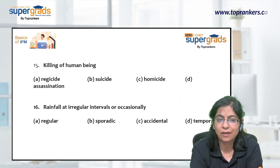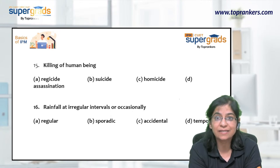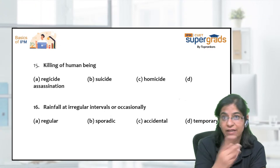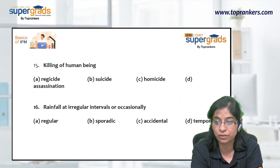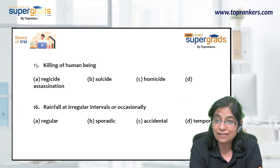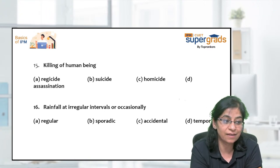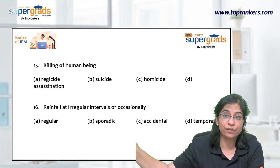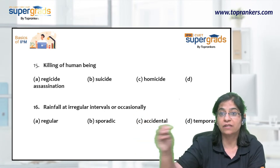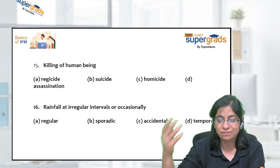Next: 'Killing of a human being.' Regicide is killing a king. Suicide is when one kills himself — a very common term. Homicide is killing a human being. Assassination is also killing a human being, but specifically an important person — a prominent figure. If an ordinary person is killed, that is homicide or murder. The answer is homicide.